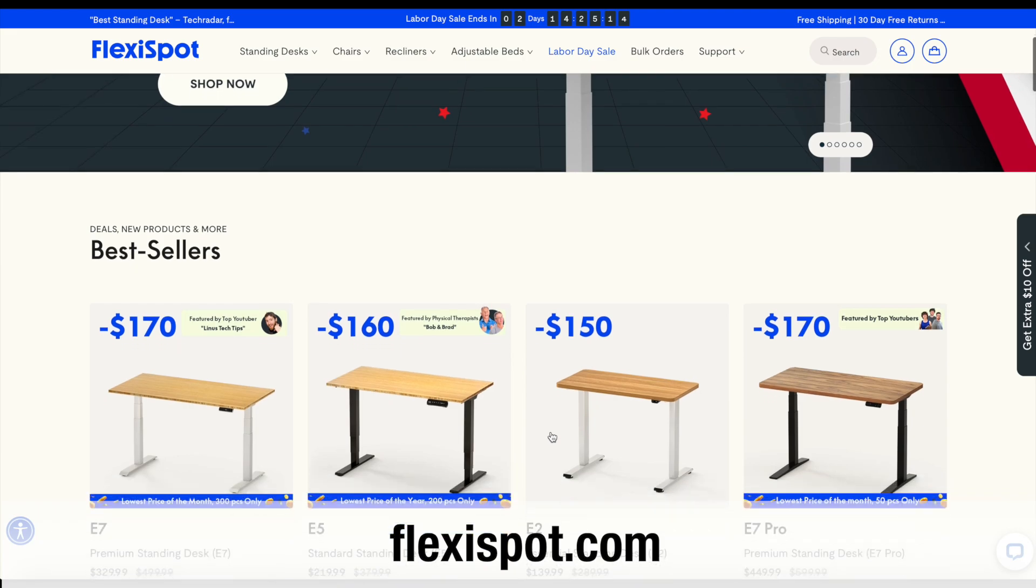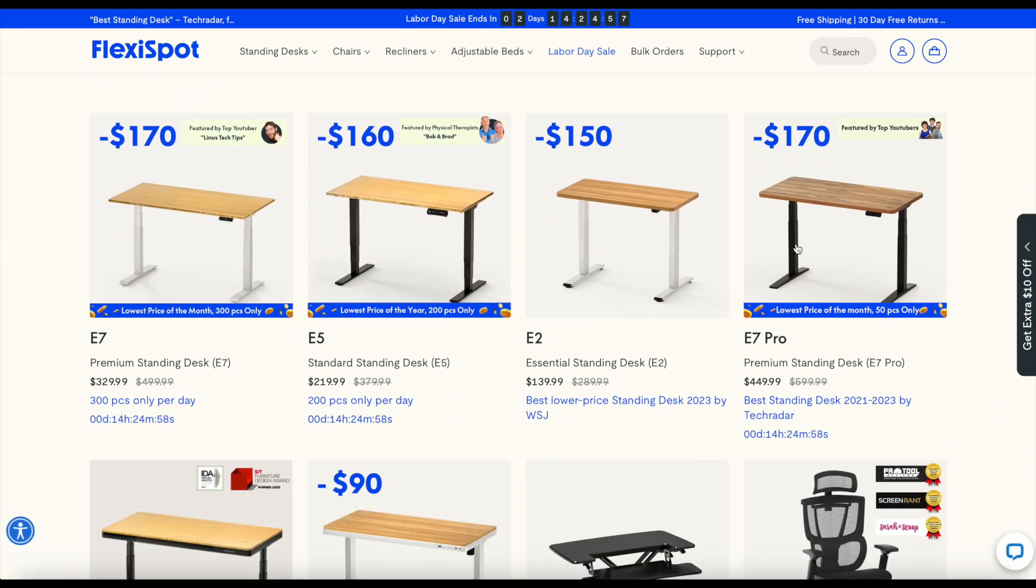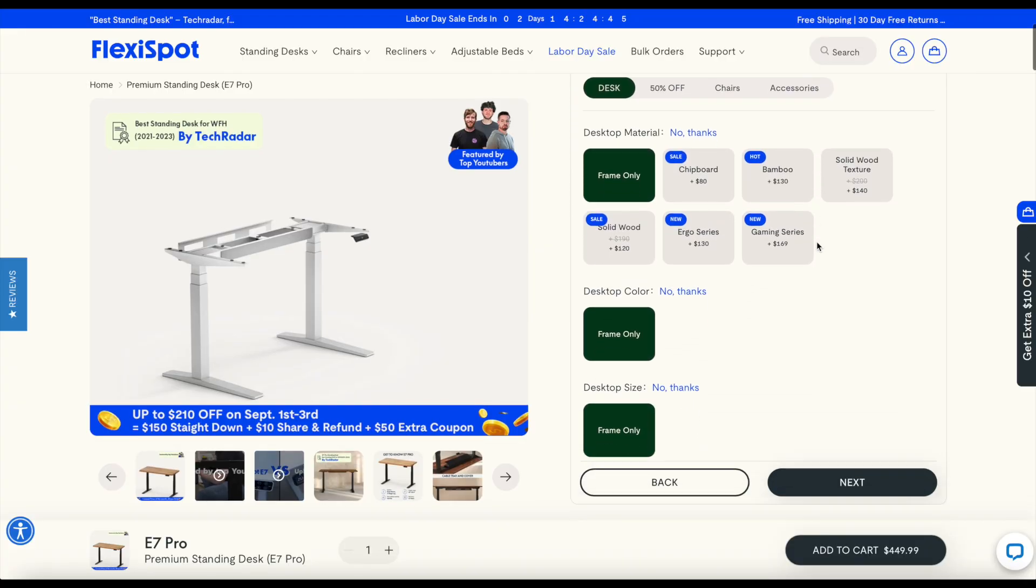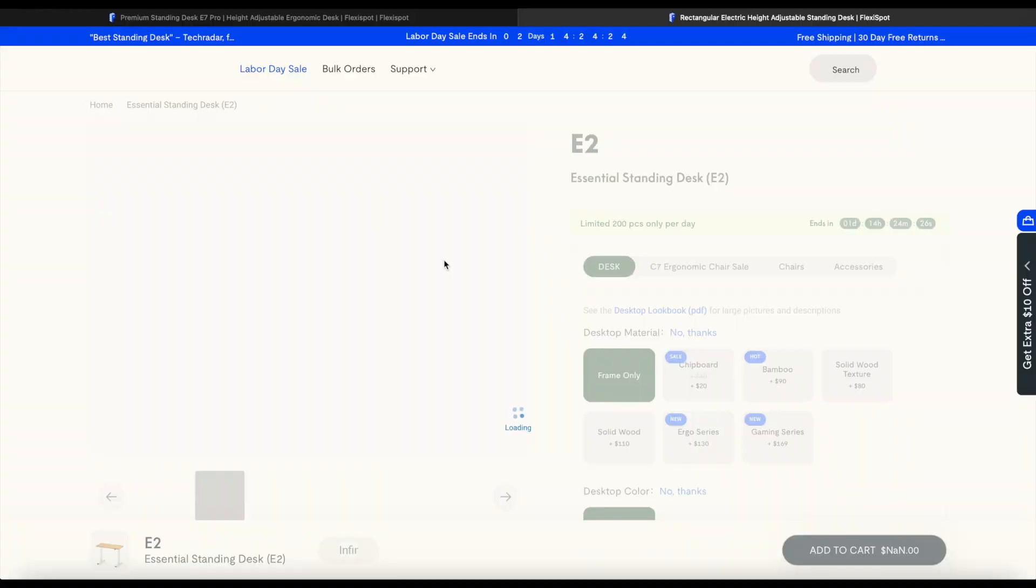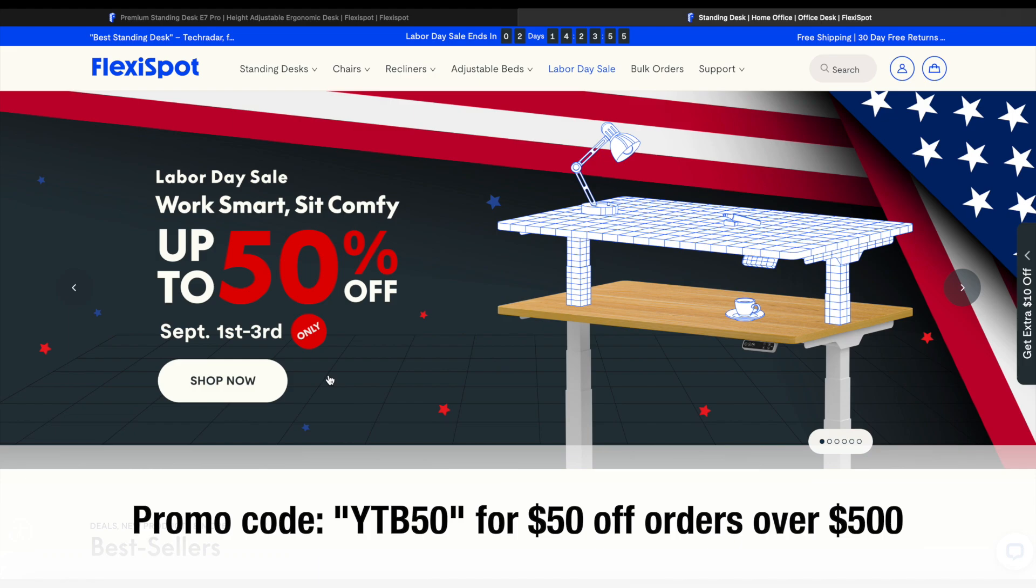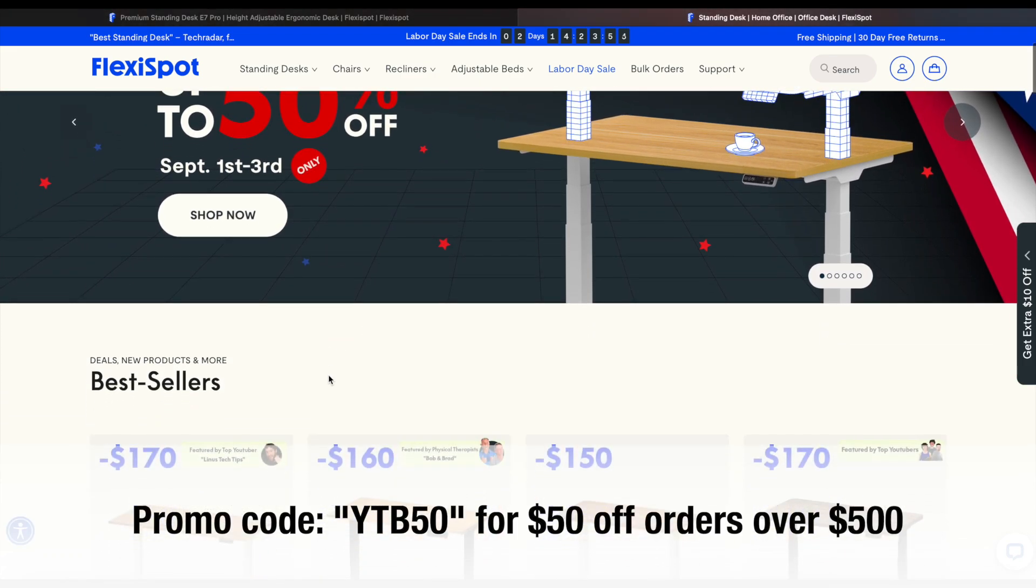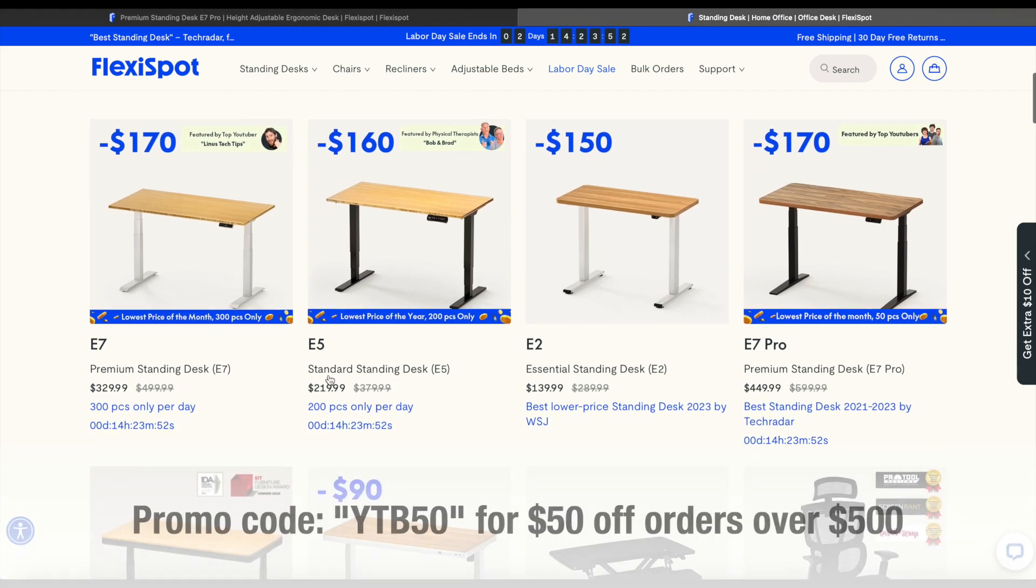Flexispot provides all kinds of standing desks and ergonomic chairs to meet your needs. If you want a premium standing desk, you can check their E7 Pro C frame, or if you're on a limited budget, you can choose the E2 model which only costs $140. Don't forget to use promo code YTB50 for $50 off orders over $500. And now, back to the video.